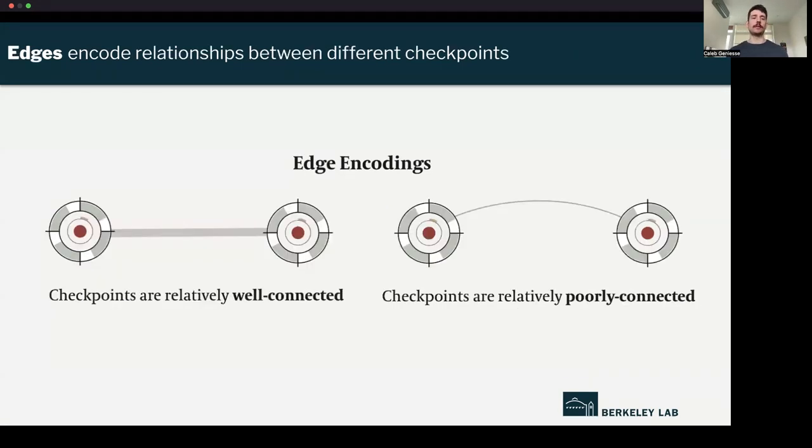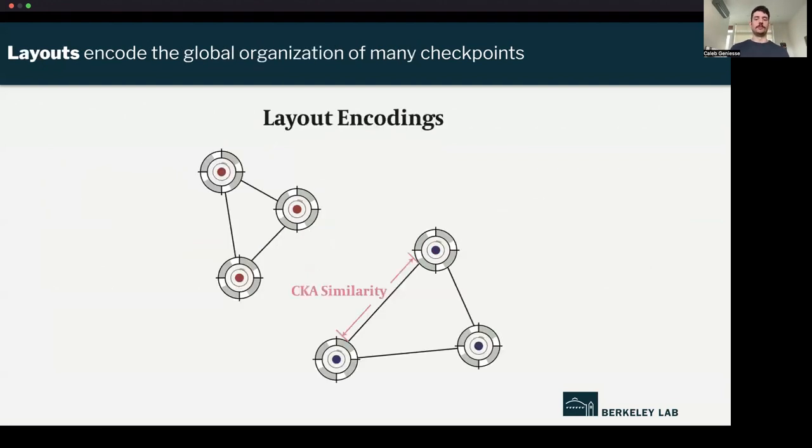Once we have two checkpoints, we can connect them by an edge. This is where we use the mode connectivity that I mentioned. We draw a thicker or wider edge if they are better connected, so if they have better mode connectivity, and we'll draw a smaller edge or indicate lower connectivity with that thinner edge between them.